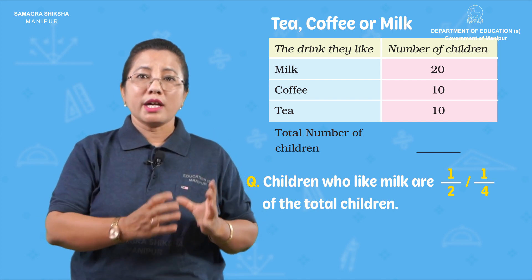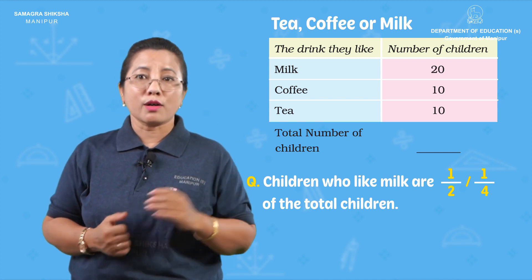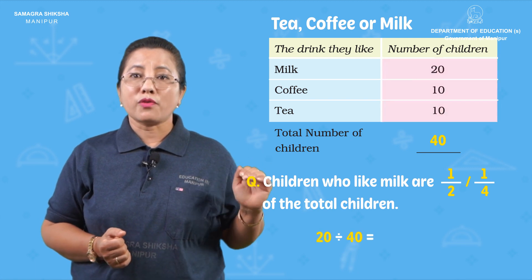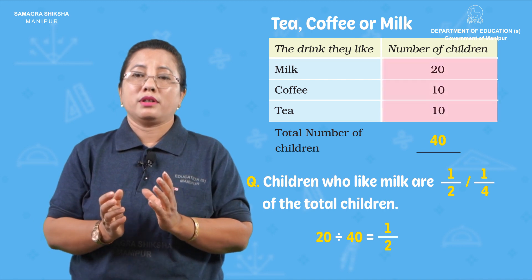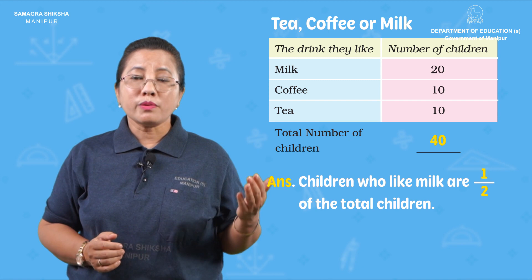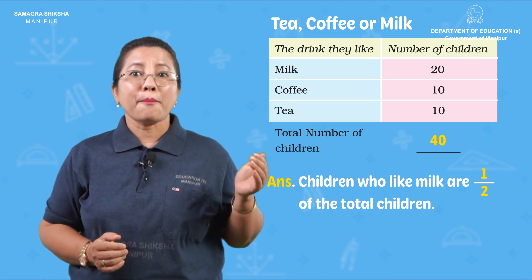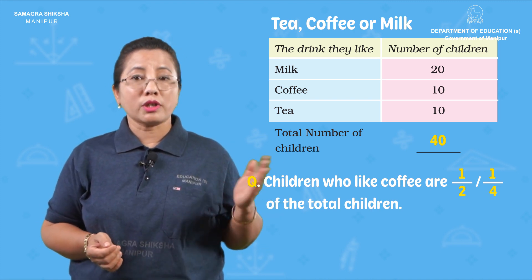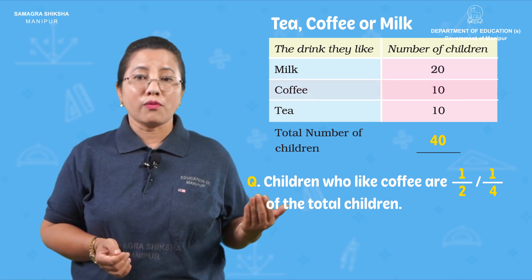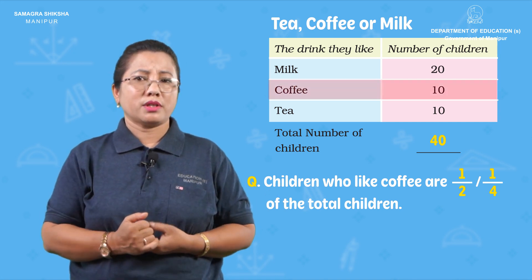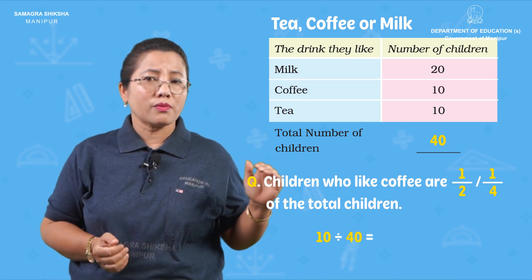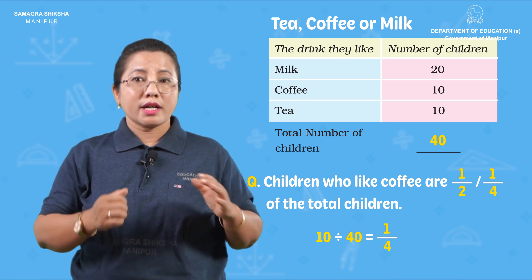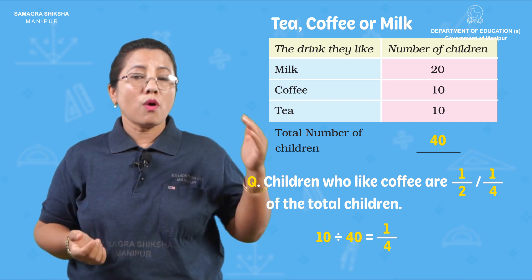The total number of children is 40. The number of children who like milk is 20. Twenty divided by 40 is one-half. So one-half of the total children like milk. Children who like coffee are one-fourth of the total children. The total number of children who like coffee is only 10, which means one-fourth of the total children like coffee.